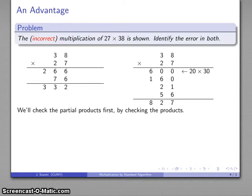So what am I supposed to be getting? Well, this is supposed to be 20 times 30, 600. Then what do I need to do? Well, I need to multiply 20 times 8, 160. I need to multiply 7 times 30. And, oops, there's my mistake.